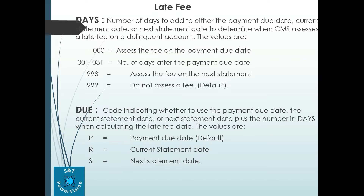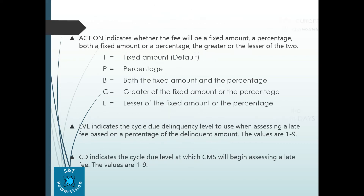The Date indicator field specifies whether to use the payment due date, current statement date, or next statement date, plus the number of days when calculating the late fee date. The values are: P for payment due date, R for current statement date, and S for next statement date.